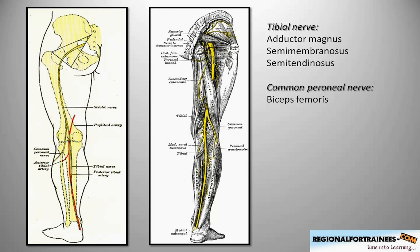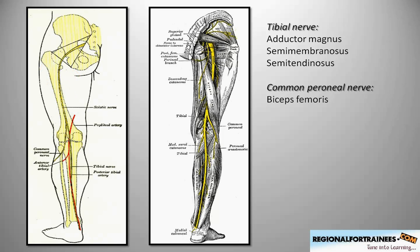Let's have a look at the course of these nerves in the lower extremity. On the left-hand side we can see the course of the sciatic nerve and its relationship with bones; on the right-hand side, its relationship with the muscles. The sciatic nerve emerges from the pelvis passing through the greater sciatic foramen, lying laterally underneath the piriformis muscle, and subsequently comes to lie between the greater trochanter and ischial tuberosity.